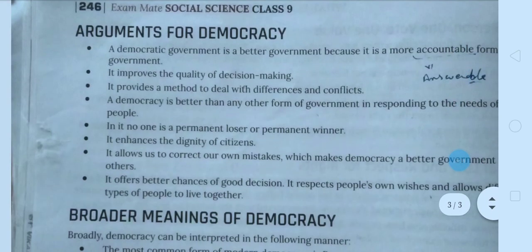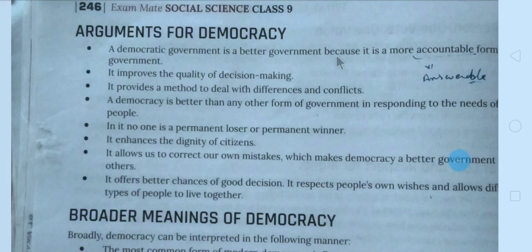Now come on the arguments in favour of democracy. Better form of government kyun hai — doosron ke comparatively, monarchy ya dictatorship ke comparatively — kyun? Because it is a more accountable form of government. Koi bhi government ho, woh answer dene ki koshish karti hai public ko — ki kya reason tha, mainne ye decision liya. Aur sabse badi baat hai, agar public ko decision pasand nahi hai, to woh usko force kar sakti hai to change the decision.